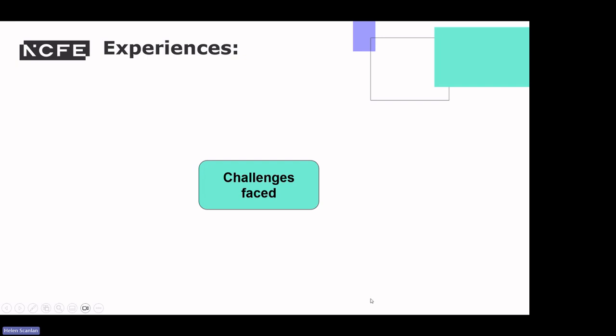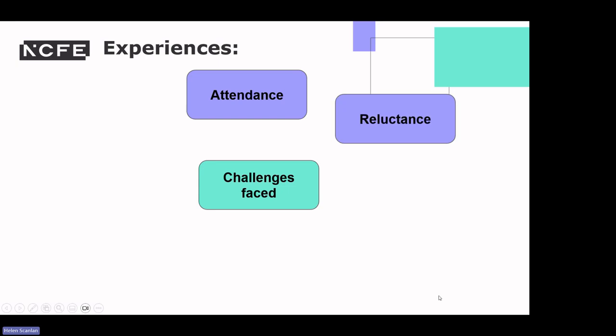I'm going to run through some of the challenges I've experienced to provide context for the next activities. The first is attendance — when learners don't attend or even arrive on time, that provides a challenge. Having to revisit important points before the class can move forwards creates issues and can impact on the progress of learning for everybody. The next challenge is reluctance — learners being reluctant to participate in classroom activities, complete coursework, homework tasks, or formal assessment activities. Beyond reluctance is refusal — some learners who have refused to do what is asked or expected of them can be another frustrating challenge.